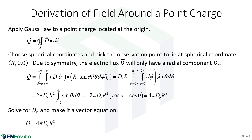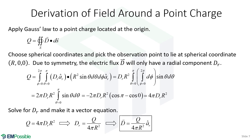So our equation is total charge Q equals 4 pi D_R R squared. We can solve this expression for D_R. Now, D_R really only has the radial direction, and we've calculated that, so we can easily make that a vector equation. And there is our expression for calculating the electric flux around the point charge described by charge Q.